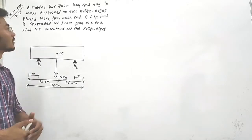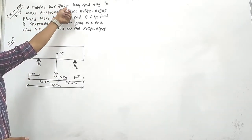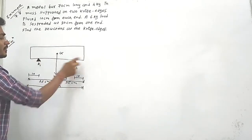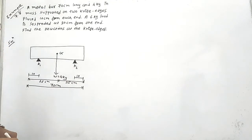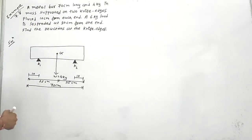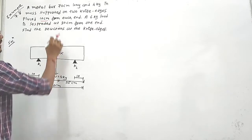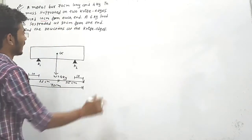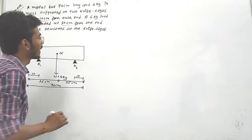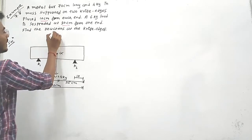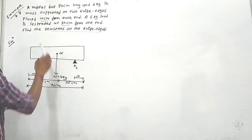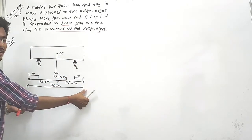Example 7.8: A metal bar is 70 cm long with a mass of 4 kg. It is supported by two knife edges and has a 9 kg load placed 10 cm from each end, plus a 6 kg load. The bar is suspended 30 cm from one end, and we need to find the reactions at the supports.